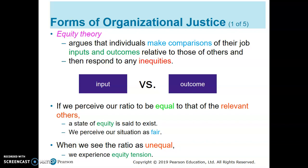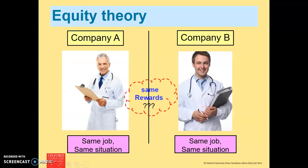But if our effort is more and our colleagues' efforts are less, but we got the same salary, then we consider it unequal or unfair. So we tend to compare input versus outcome. For example, comparing Company A and Company B — the same job, the same situation — whether they got the same reward, the same compensation. If it is the same, then it is fair, so equal, which applies equity theory.